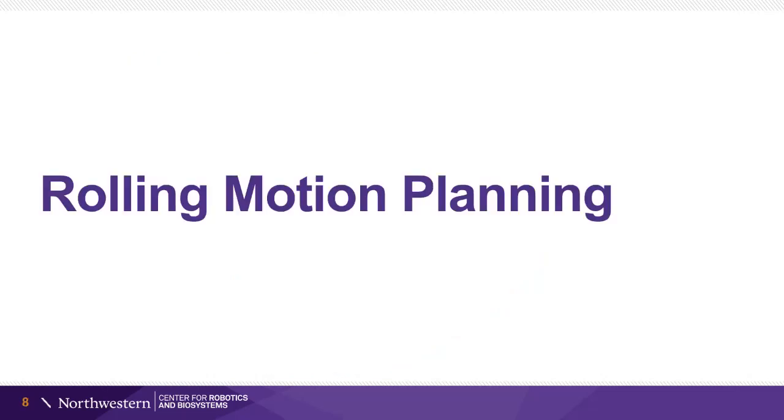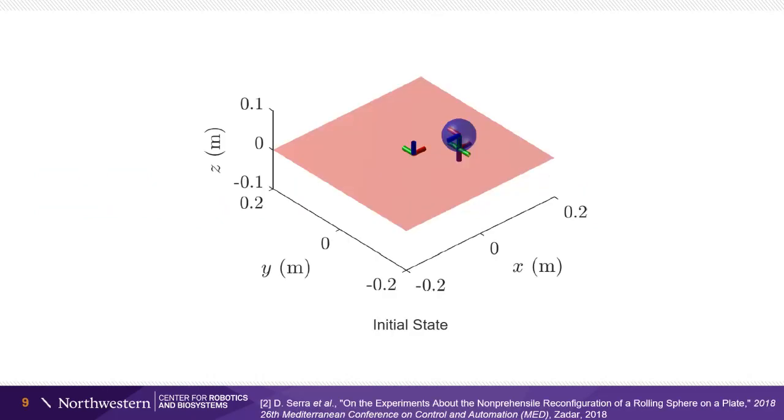We now demonstrate motion planning for robotic contact juggling and compare to an example from previous work. Sarah et al. used a geometric method to find rolling trajectories for a ball on a plate. The initial state is shown, and the goal state has a translational displacement in the negative y direction and a rotational displacement as shown.